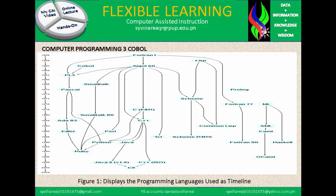In Figure 1, it displays the programming language timeline. You will notice that COBOL is from Fortran, then goes to PL/1, then we have COBOL. These are considered to be one of the oldest programming languages in the world.